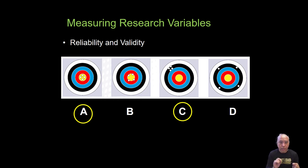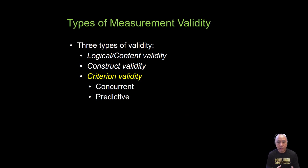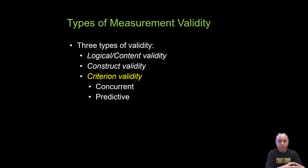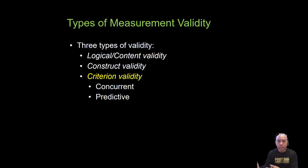In terms of validity, there are three types of measurement validity often cited in kinesiological research. The first is content-related validity, which refers to the degree to which a measurement or test is able to measure what it's designed to measure. For example, I wouldn't use a blood pressure cuff and sphygmomanometer to measure someone's jump height — it wouldn't have good content-related validity.